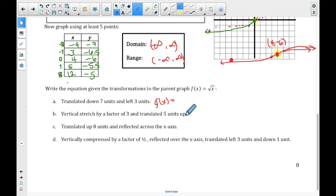Okay, these last four are basically taking the words and putting it into an equation. So if we go down 7 and left 3, take a second, what do you think on that? Okay, you should be getting x plus 3. That makes it go left 3, and then minus 7 makes it go down 7. Vertical stretch by a factor of 3, and translated up 5 units. Take a second to figure out that one.